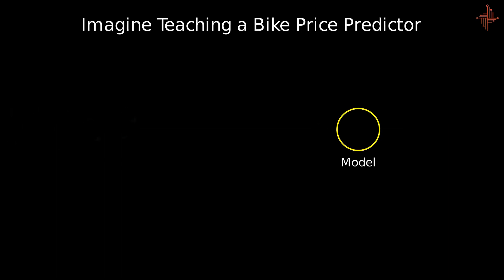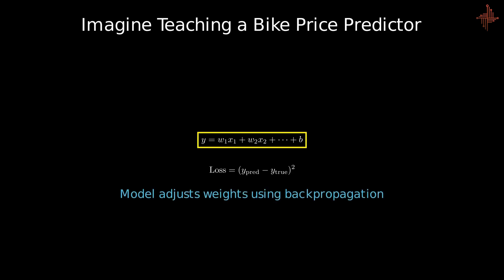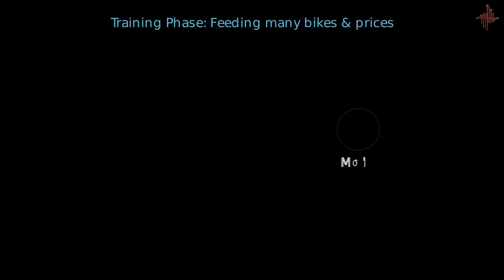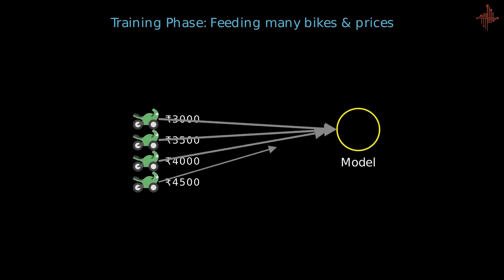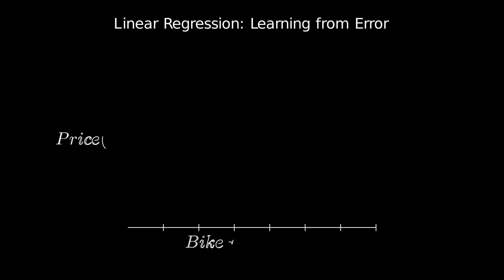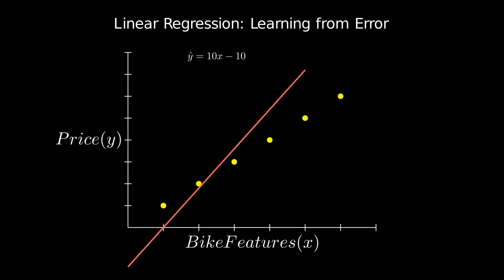So first of all we choose the problem which is to predict a number, so we'll go for linear equation. Now we'll train the model using different bike features and prices. The model at first might give an error but it will learn to go back and fix it during the model fitting. It does so until accuracy is up to the mark.